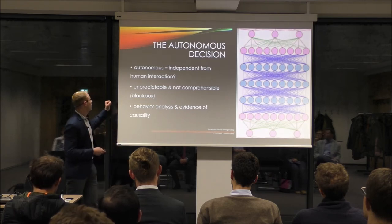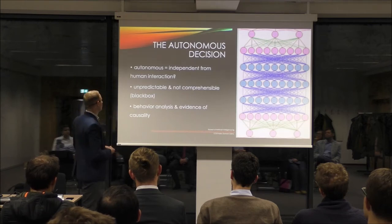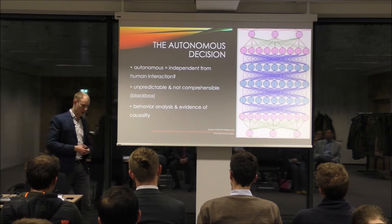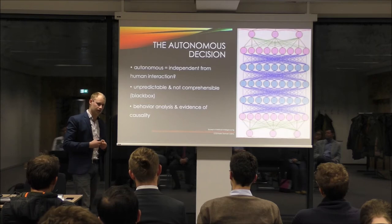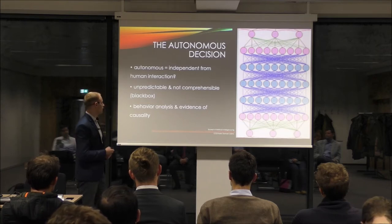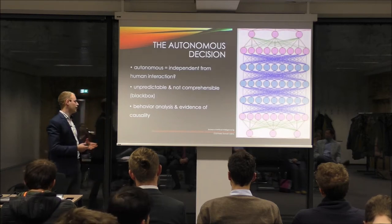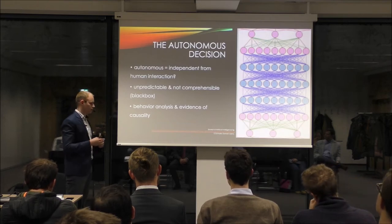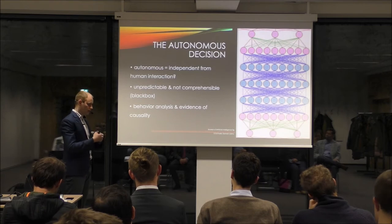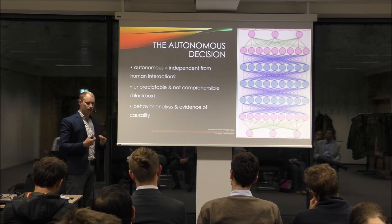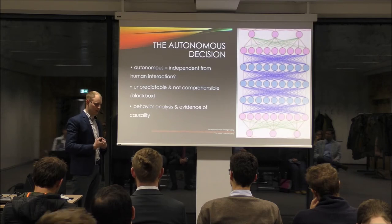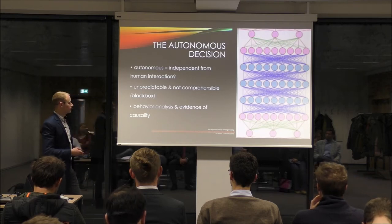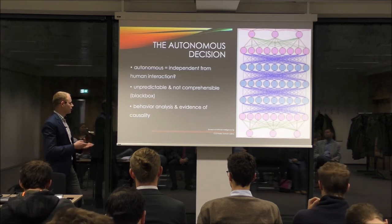'Autonomous' here means independent from human interaction, which is critical from a legal perspective, since historically everything in law evolved around the human element, especially regarding liability. There are also critical issues of behavior analysis and evidence of causality. If damage has been done, you need to understand the behavior of the machine and demonstrate that the machine's action caused the damage. This is difficult with deep neural network architectures.